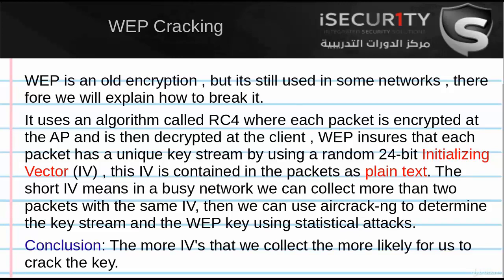The problem with the initialization vector is it's very short — only 24 bits. In a busy network, a very large number of packets are sent, so the possibilities of random IVs will be exhausted and we'll end up with two packets sharing the same IV. Once we have two packets with the same initialization vector, aircrack-ng can use statistical attacks to determine the key stream and then the WEP key.